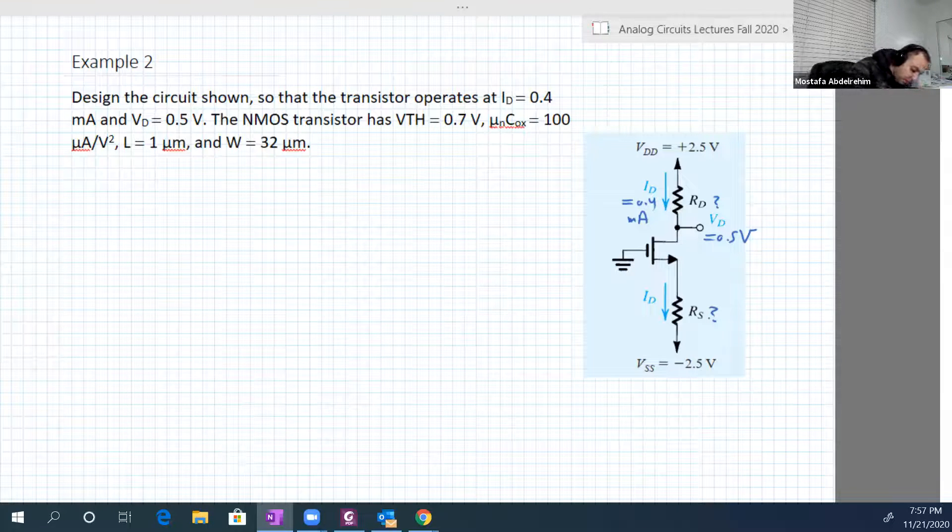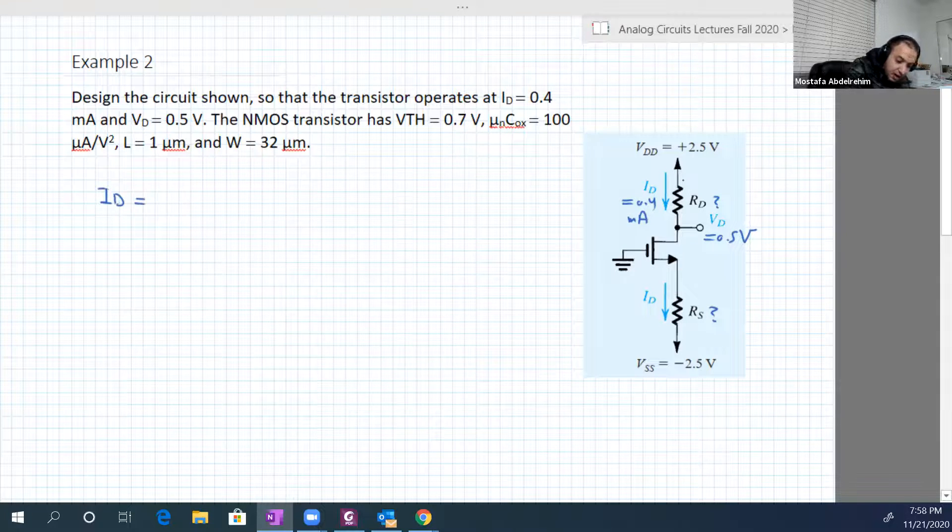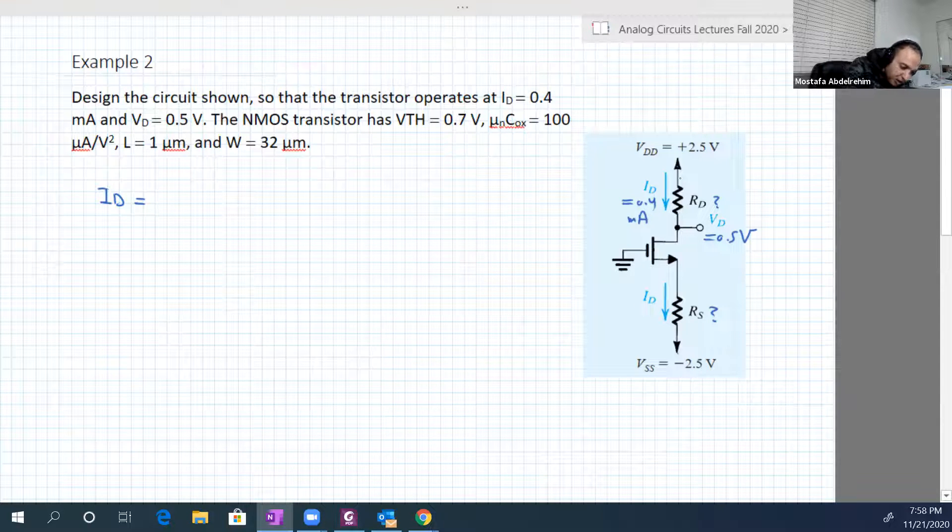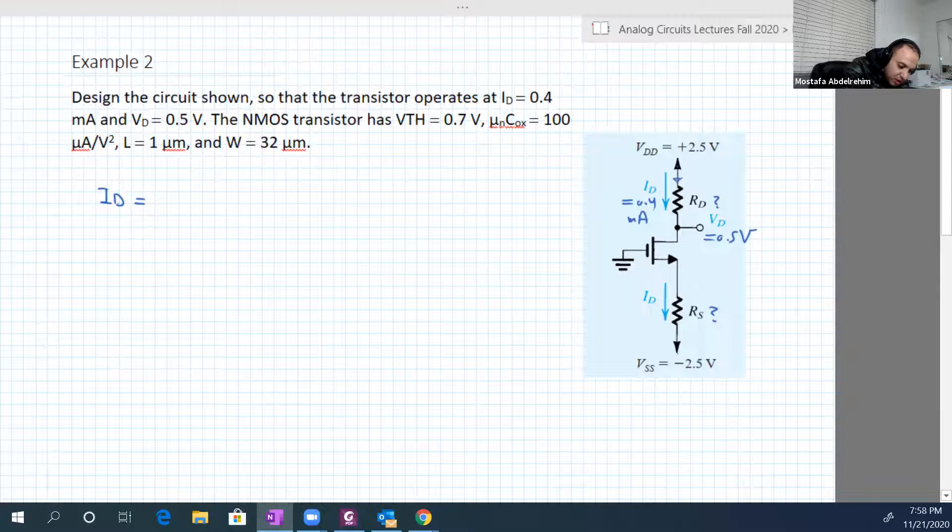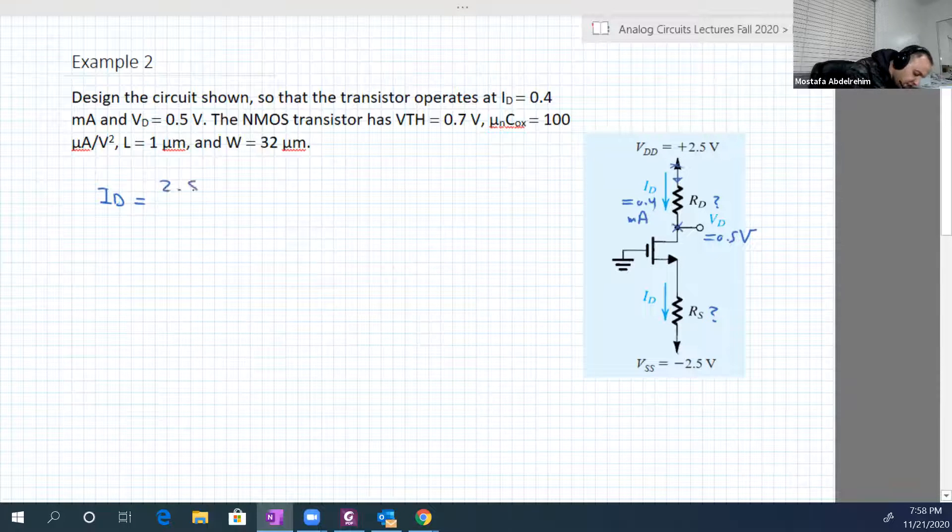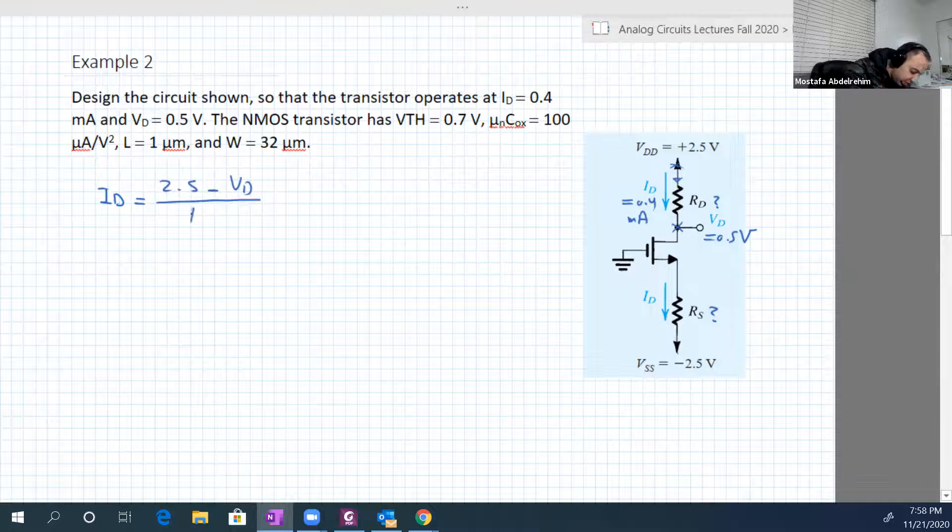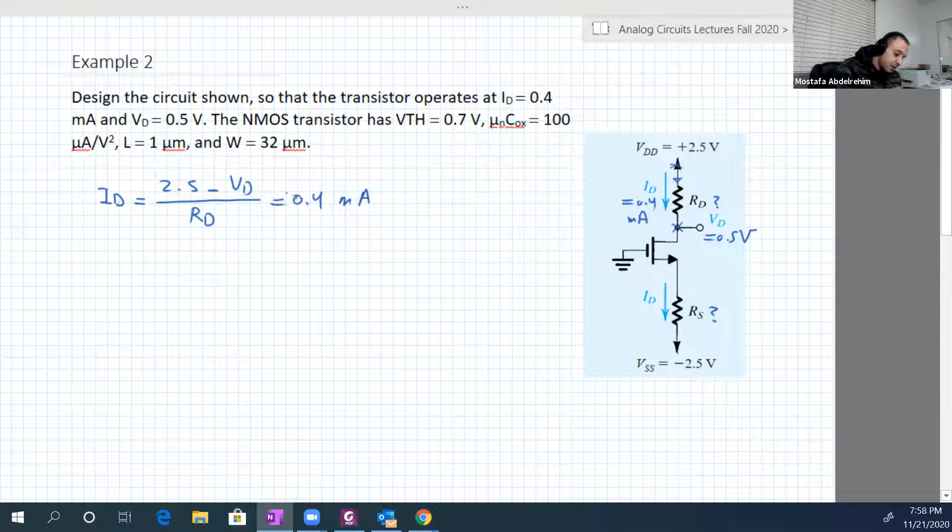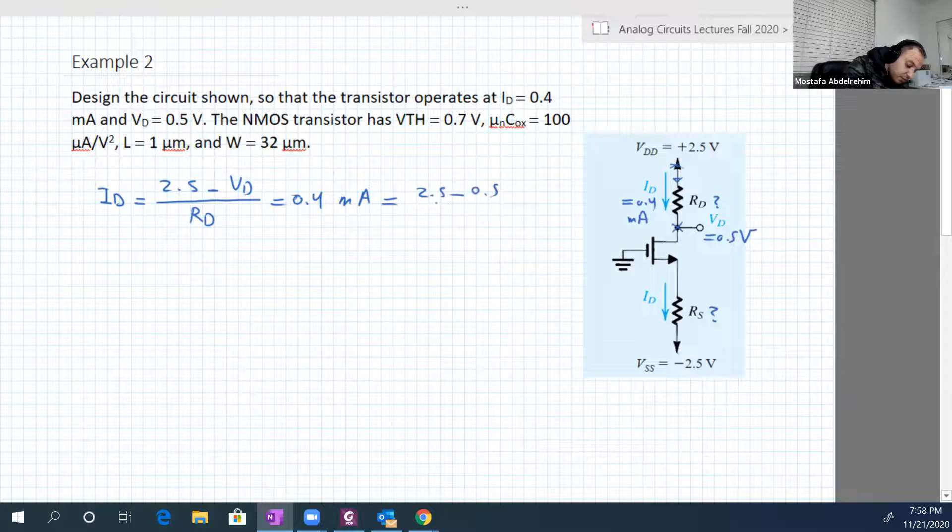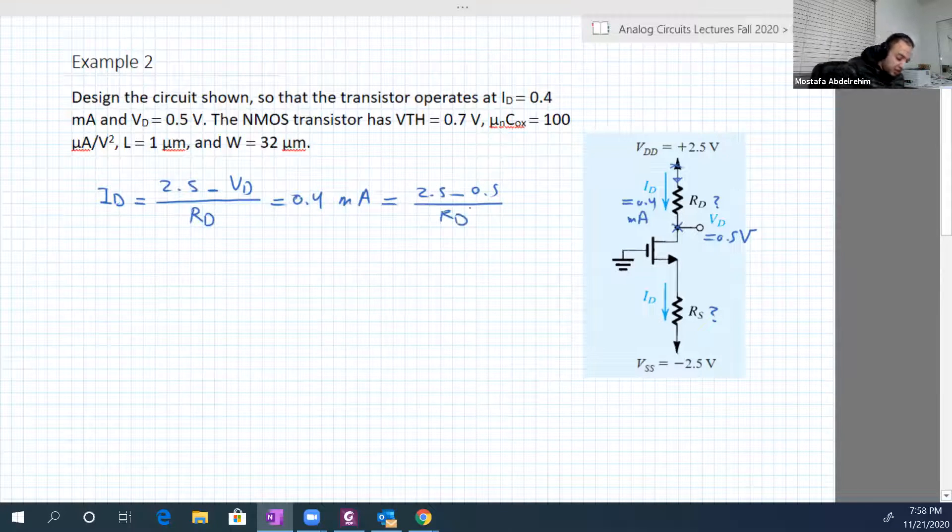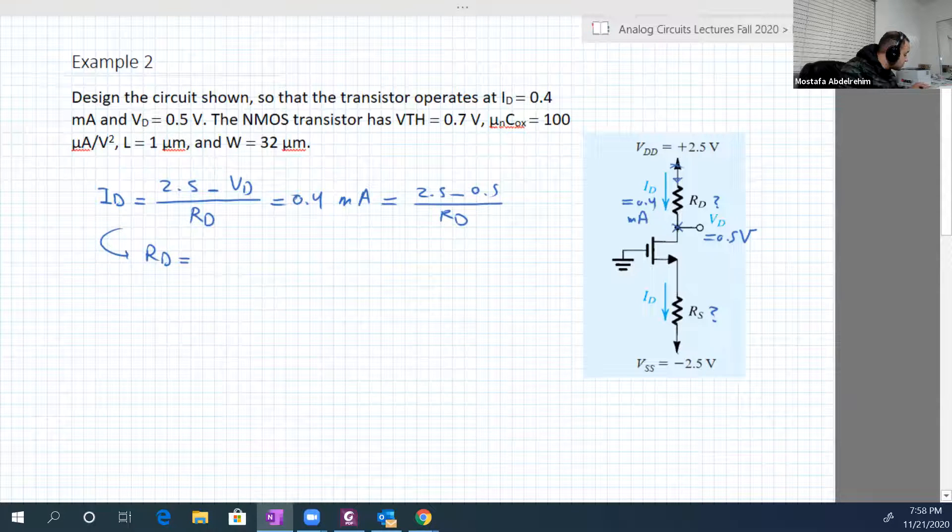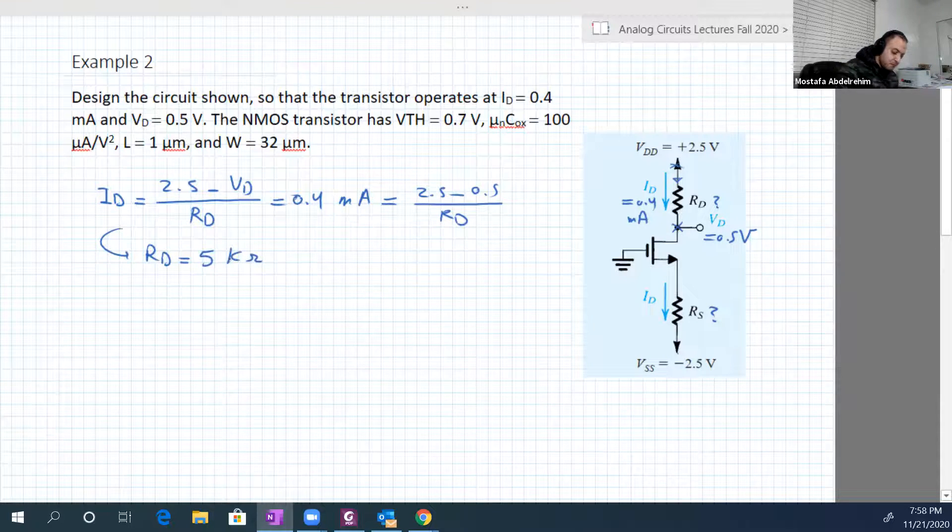We know VD and we know ID. ID is flowing from that point to minus VSS or minus 2.5, so it's equal to 2.5 minus VD over RD. This equals 0.4 milliampere. VD is known, VD is 0.5. So the only unknown here is RD, so from that RD will be equal to 5 kilo ohms.